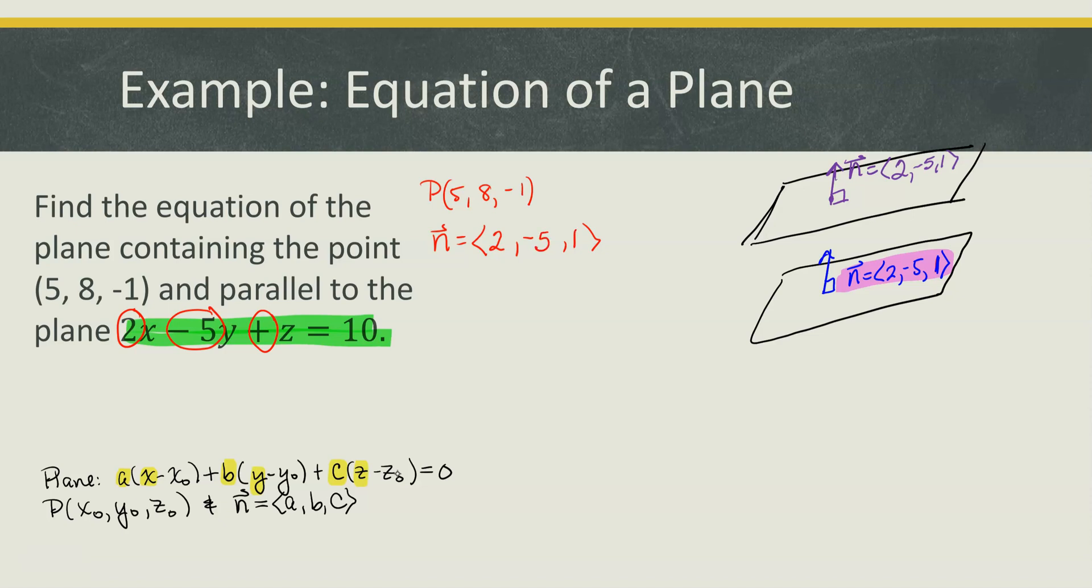And now that we have these two pieces of information we can simply use the point normal form of the plane and write our equation of the plane. So recall that the x component of the normal vector is a, the y component is b, and the z component is c.